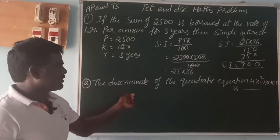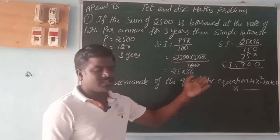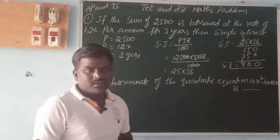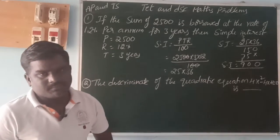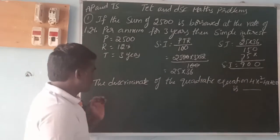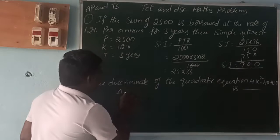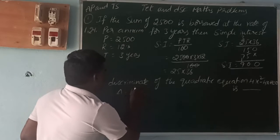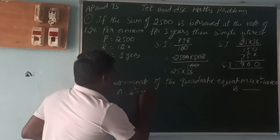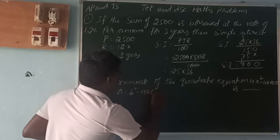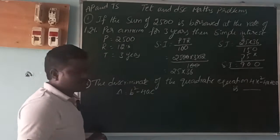Next, find the discriminant of the quadratic equation. The discriminant formula is: delta equals b squared minus 4AC.